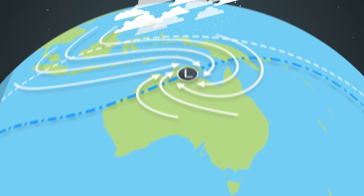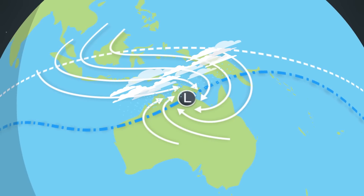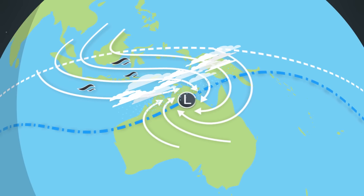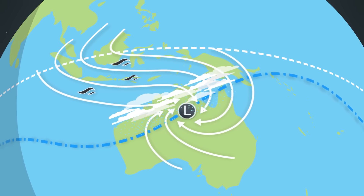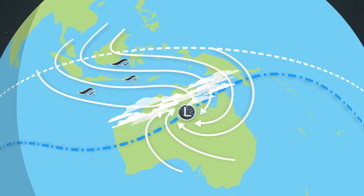True monsoonal flow with deep low-level westerly winds exists north of the trough, so when the trough moves south over a location, this area becomes affected by monsoonal conditions.